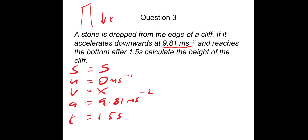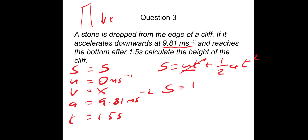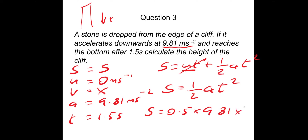We need an equation without V, so that's S equals UT plus one-half AT squared. Since U is zero, the UT term disappears, leaving S equals one-half times A times T squared. Putting our numbers in: S equals 0.5 times 9.81 times 1.5 squared. Putting that in your calculator gives S equals 11 metres.